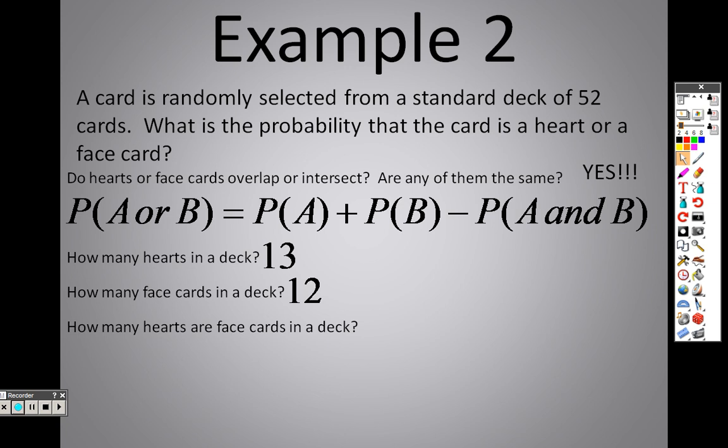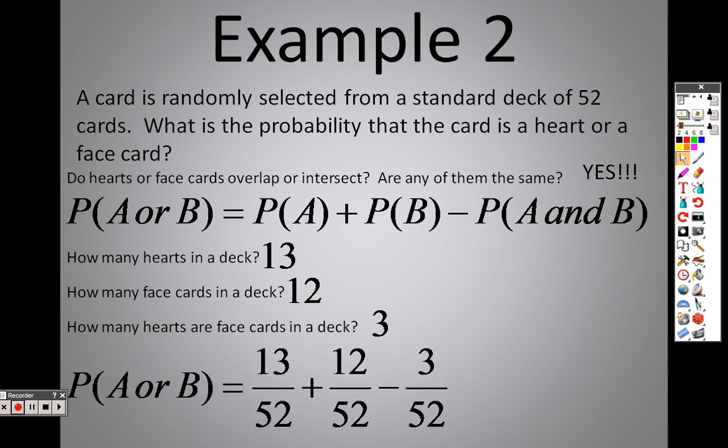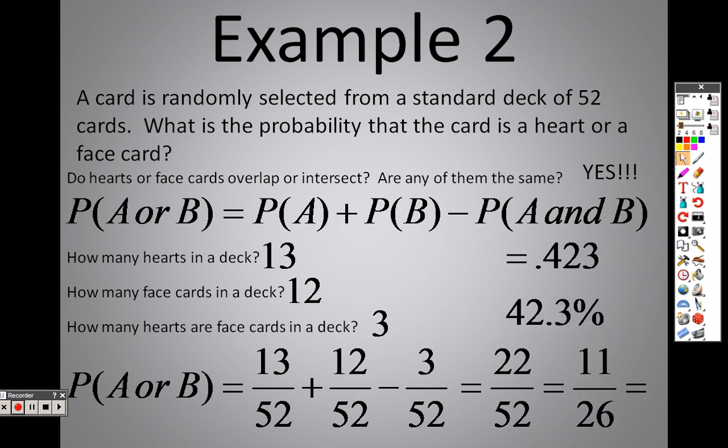There are 13 hearts and there are 12 face cards, but they both share 3 face cards that are hearts: the jack of hearts, the queen of hearts, and the king of hearts. So when we do this problem, I do 13 over 52 for the hearts, I do 12 over 52 for the face cards, and I take 3 out of 52 out because there are 3 cards that are double counted that are the same in both categories. We get 22 out of 52, which leaves us with 11 over 26, which is 42.3%.